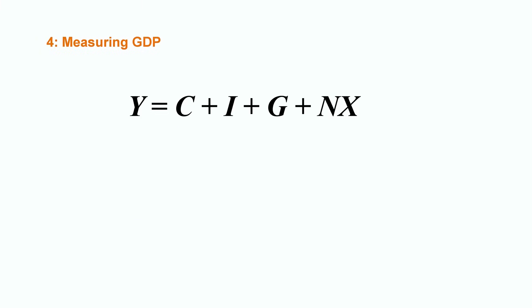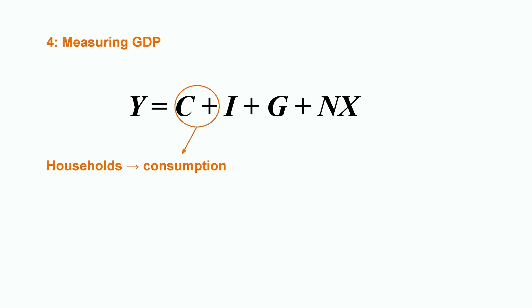Now, for estimating GDP, we will look at the definition based on overall spending. This is the most usual way to estimate GDP because the data is easier to collect. However, there are many countries which use alternative estimations. But let's consider the basic way of measuring GDP. If we want to calculate overall spending, we have to establish who is spending. So far, we've talked about households and firms. Households consume goods and services, and firms invest in order to produce them. Now there are more agents to consider.